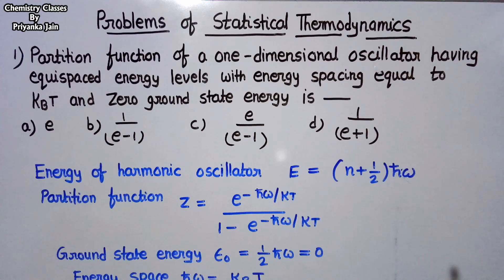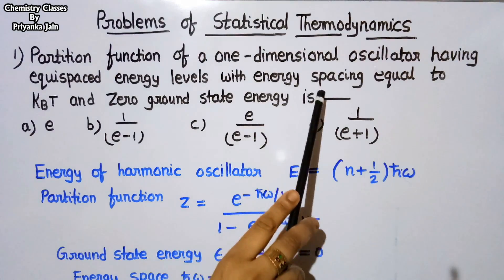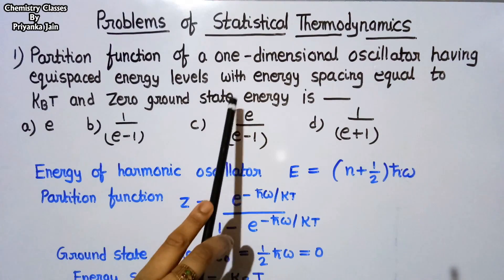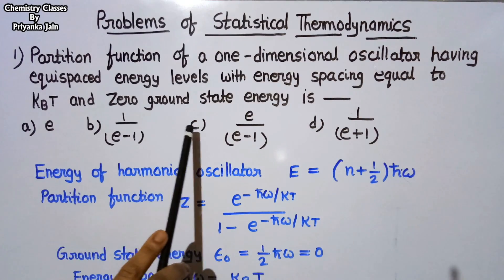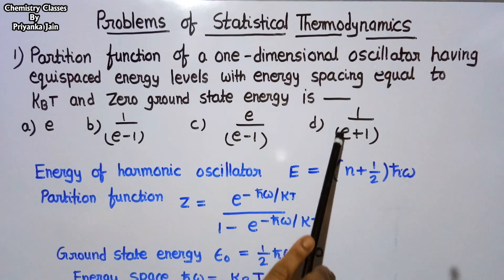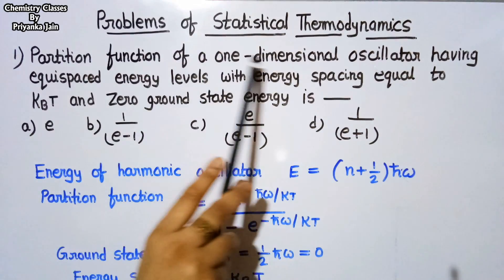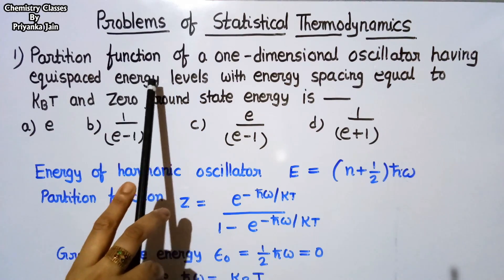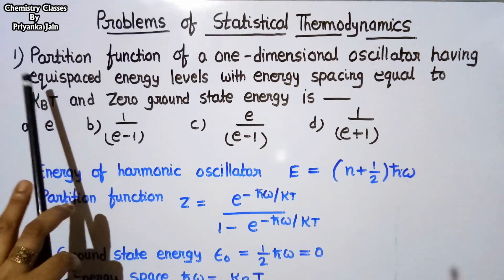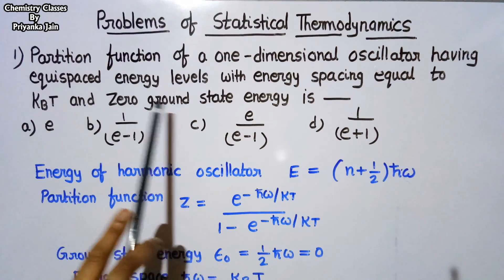Our first problem is from December 2016. The question is: the partition function of a one-dimensional oscillator having equally spaced energy levels with energy spacing equal to kBT and zero ground state energy. The options are: option A is E, option B is 1/(E−1), option C is E/(E−1), and option D is 1/(E+1). We need to find the partition function.